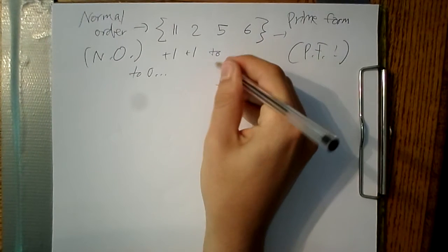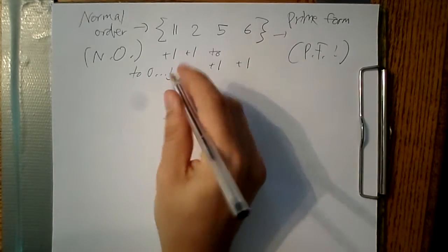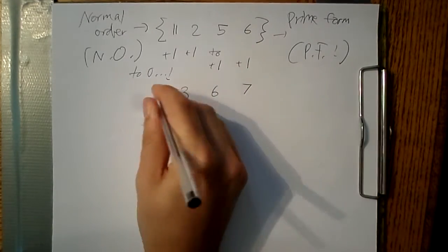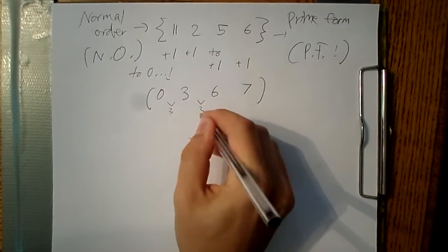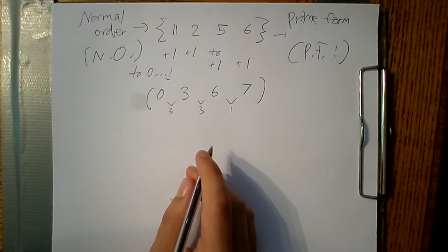11 plus 1 is zero. Remember, we're in mod 12, so we can add all the other pitch classes by 1 also. Our new set here is now 0, 3, 6, 7.